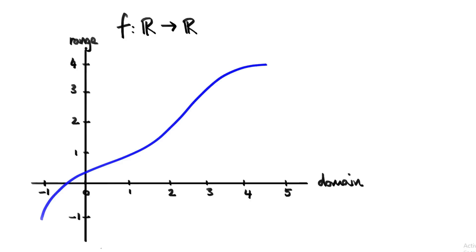So the x-axis is the domain, and the y-axis is the range. The line shows us where the input of the function meets the output. This line that I've drawn is quite smooth, and I haven't had to take my pen off the page to draw it. This is the very first layman's definition of continuity: a continuous function is one that you can draw without taking your pen off the page. I've been able to draw this function without taking my pen off the page, and it looks pretty continuous.